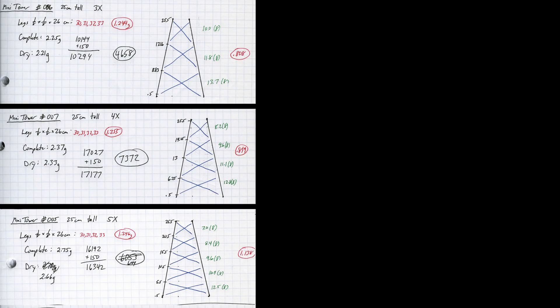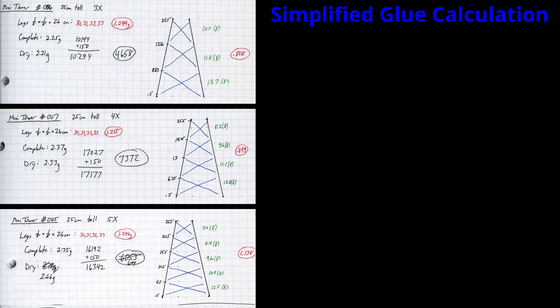If you keep consistent records of your builds, it's pretty easy to compute the glue mass. Even if it's not 100% accurate due to sanding the pieces or using a normalized length mass instead of the actual final length, the key is that it will be accurate relative from one build to the next. For example, here are three of my tower builds with three, four, and five cross bracing layers.